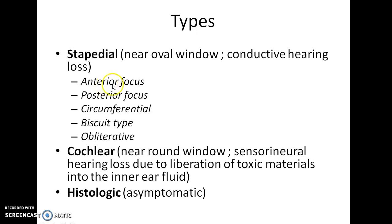Stapedial Otosclerosis is further divided into five types based on location: it can be anterior focus, posterior focus, circumferential, biscuit type, and obliterative type.